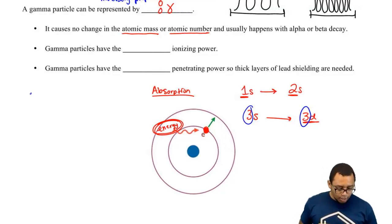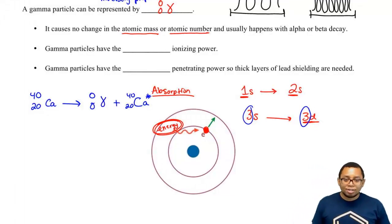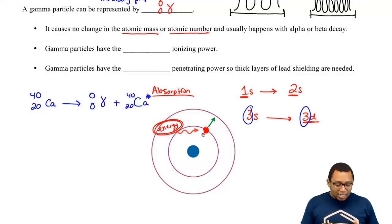So if we saw this, we'd have 40 over 20 calcium undergoing gamma emission. That calcium has an electron that has just absorbed energy and is going to become excited. We put a little asterisk by it to show it's in an excited state. That would represent a gamma emission.